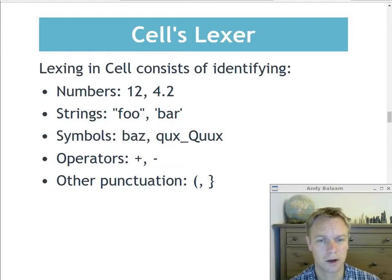So Cell's lexer only knows about these types of things. Numbers, which could be something like 12, or it could be something like 4.2. So decimals are included in that token type called number. They could be strings, which could be surrounded either by double quotes or by single quotes.